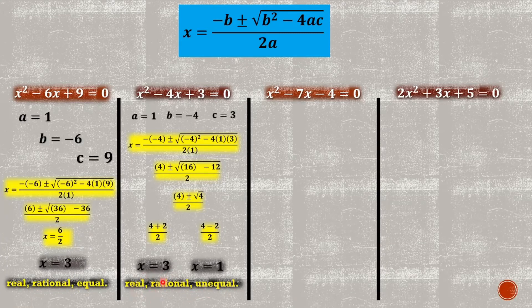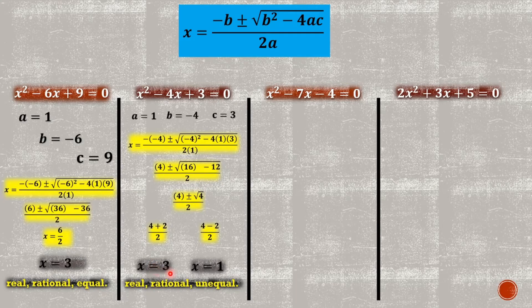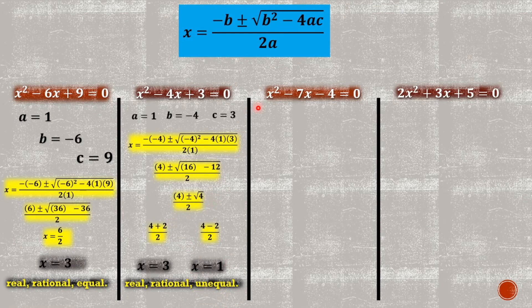Based on the discriminant, this problem is real, rational, and unequal. The solved roots are three and one, which are not equal — so unequal is confirmed. Let us proceed to problem number three.